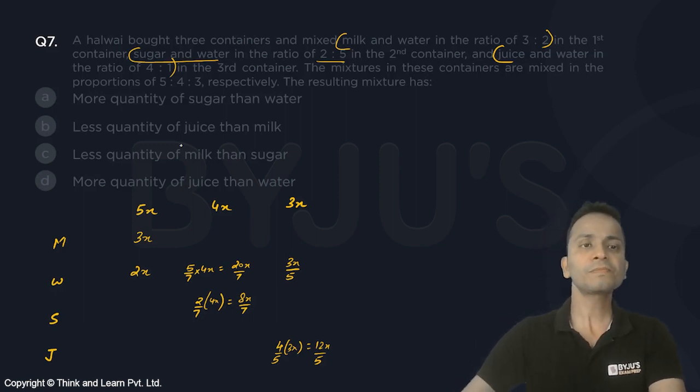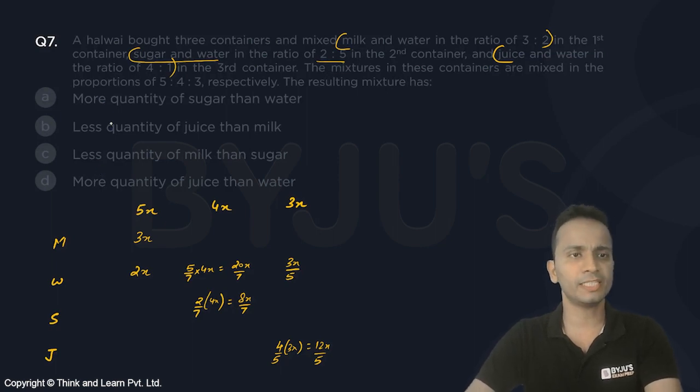These are the total quantities. Now let's check among these options which will be correct. First option: the resulting mixture has more quantity of sugar than water. So sugar is 8 by 7x and water is this, this, and this.